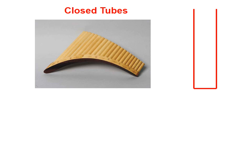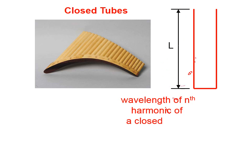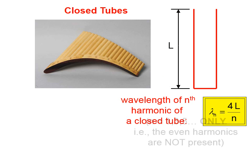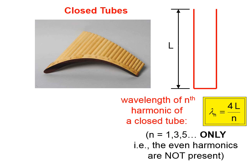For a closed tube, as you can see from the picture, it's closed at one end and open at the other. Open tubes are open at both ends. If the length of the tube is L, then the wavelength of the nth harmonic of a closed tube is λₙ = 4L/n, instead of 2L/n.